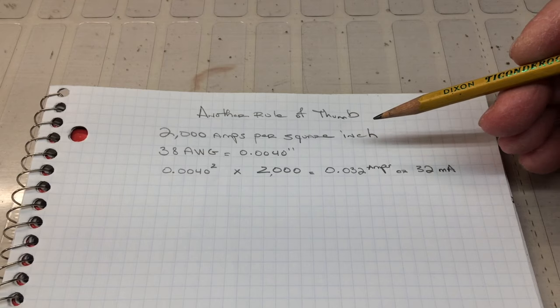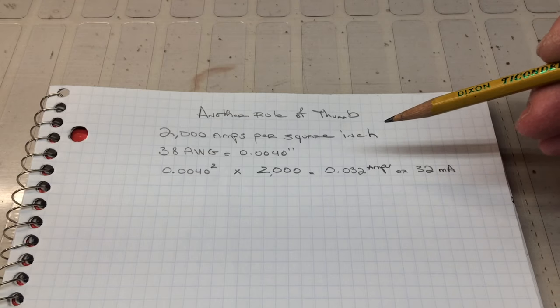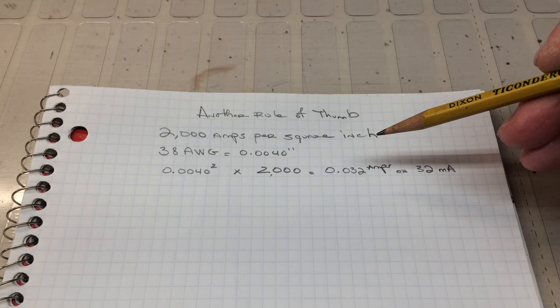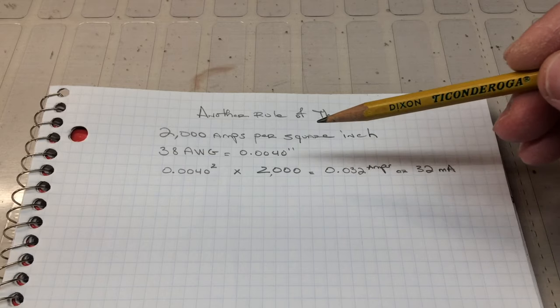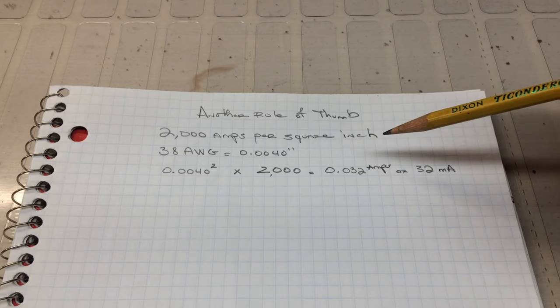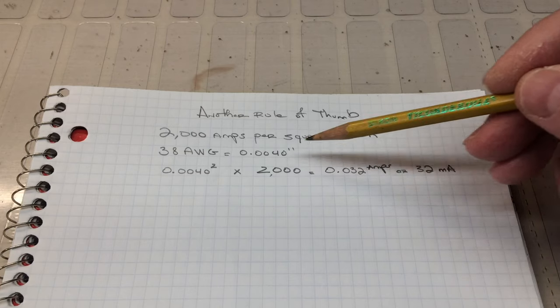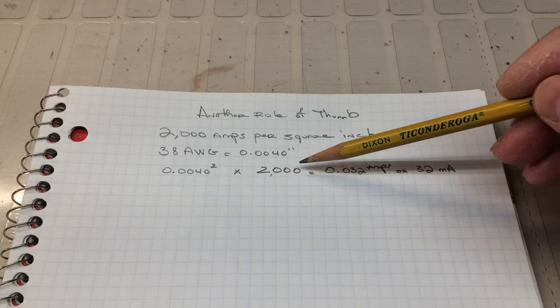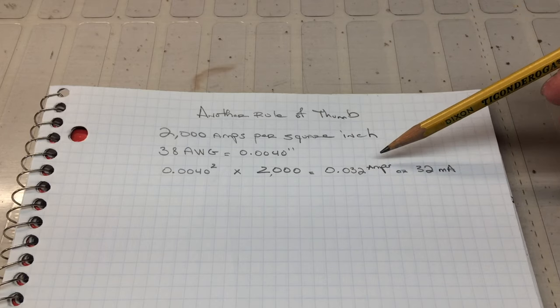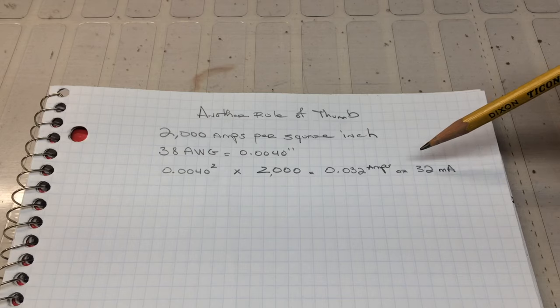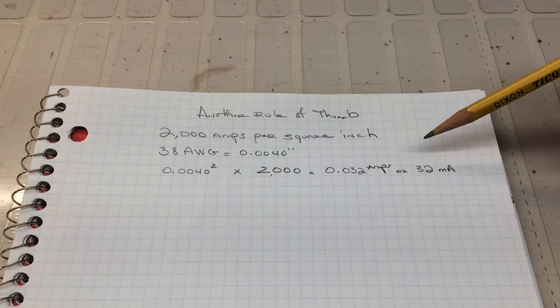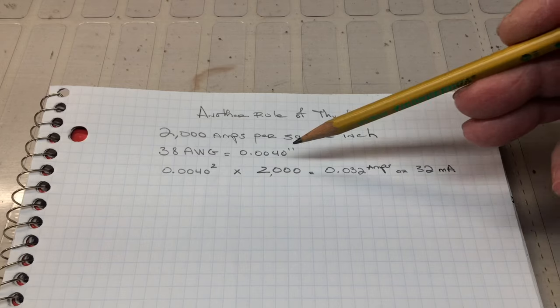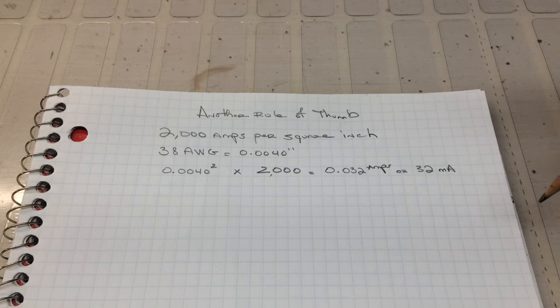As I mentioned, another rule of thumb that was used, and this will come back to 500 circular mills per amp if you do the math as well. There's 2,000 amps per square inch. Taking that same example, 38 AWG, you square the diameter times 2,000 and you can see working the math, we end up at the same point, 0.032 amps or 32 milliamps. So many of the transformers that were designed back in the day use this guideline as well. Either one works and gets you to that point.